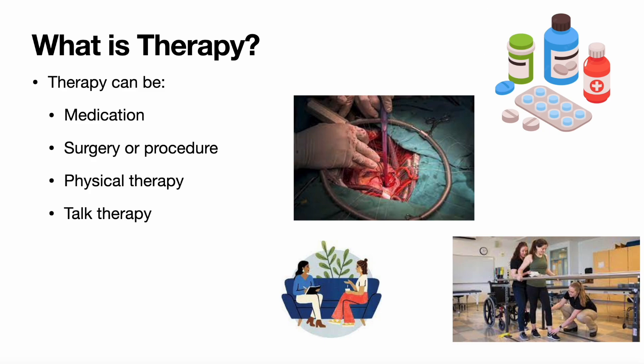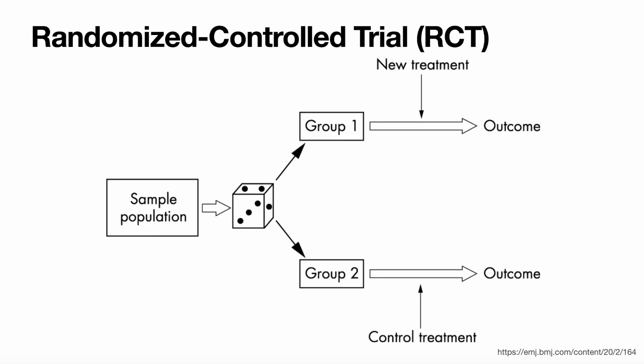First of all, just to get us all on the same page: what is therapy? Well, a therapy can be many things. It can be a medication, surgery or procedure, physical therapy, occupational therapy, or talk therapy. And usually when we're assessing a type of therapy or treatment for its effectiveness, we would do this by doing a randomized controlled trial.